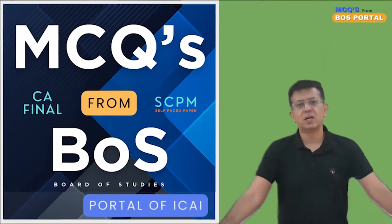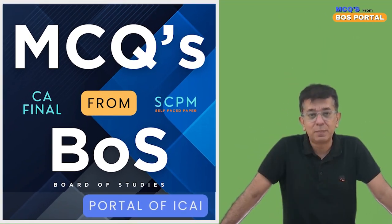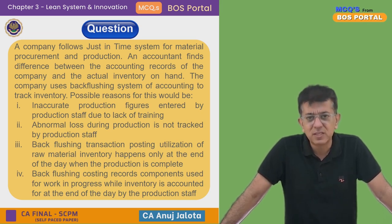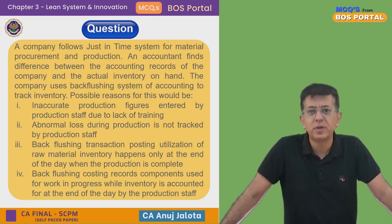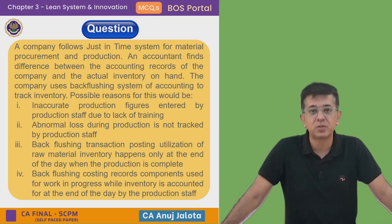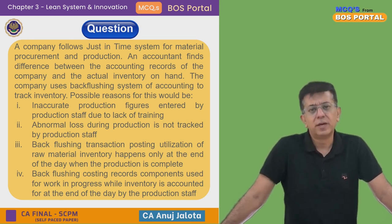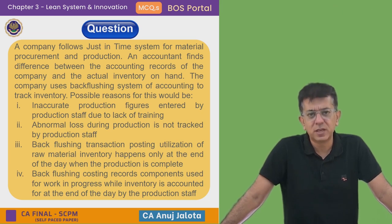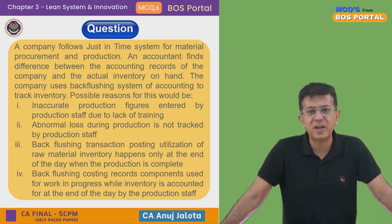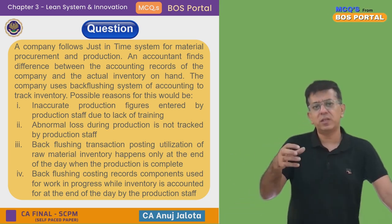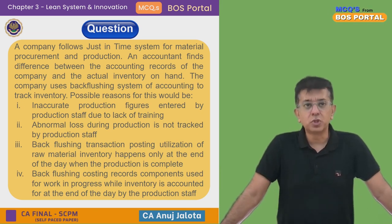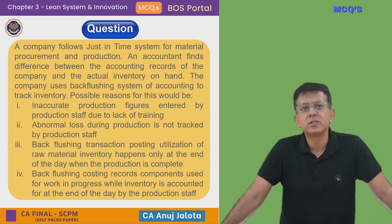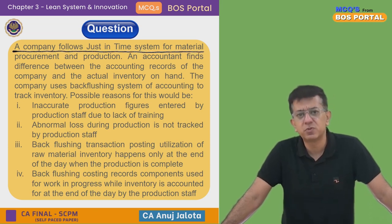We will start with the question for today. It's Chapter 3 — Lean Systems and Innovations. In this chapter we learn all the techniques for cutting down waste and making the process lean. You might have heard of a lean body — that means you have less fat. That's where the word comes from. The question for today is about Just-In-Time.